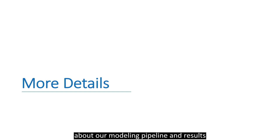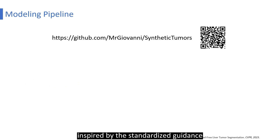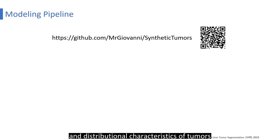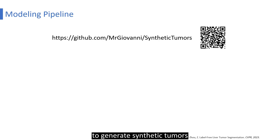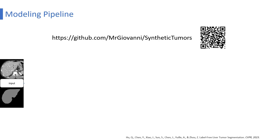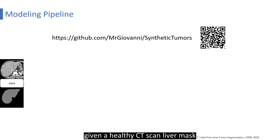Now we will provide more details about our modeling pipeline and results. Inspired by standardized guidance, medical knowledge, and distributional characteristics of tumors, we develop a modeling-based method to generate synthetic tumors. Given a healthy CT scan and liver mask, we use four steps to synthesize the liver tumor.